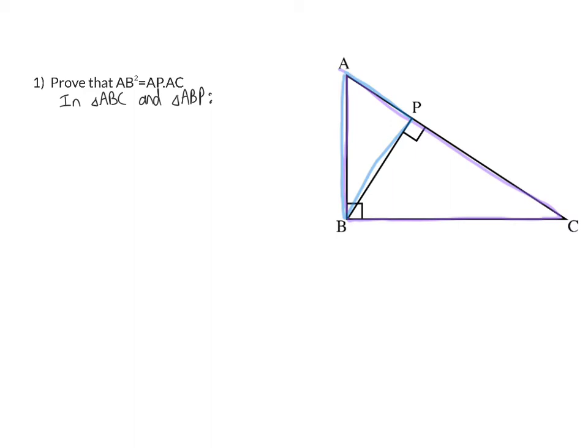In these two triangles, once again, we can start off with A being a common angle. Next up, we can say that angle B, which is 90 degrees, will be the same as angle APB, which is also 90, and this was given.